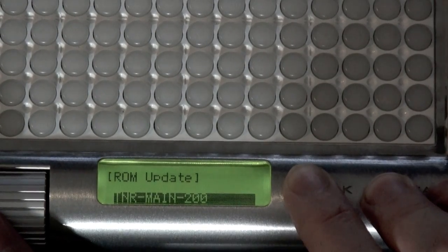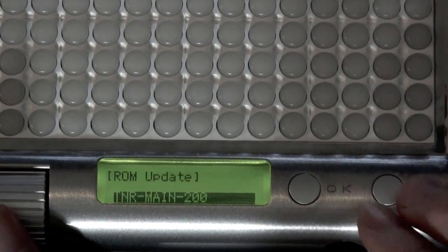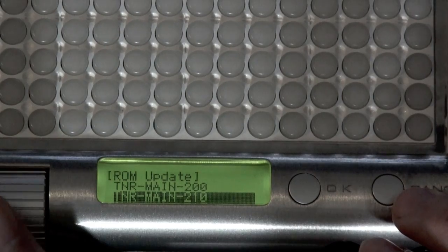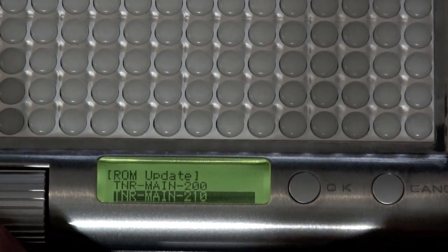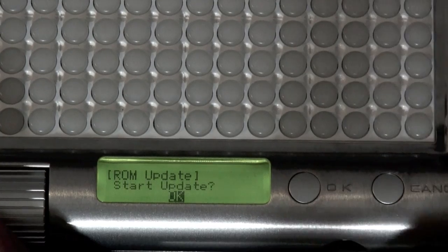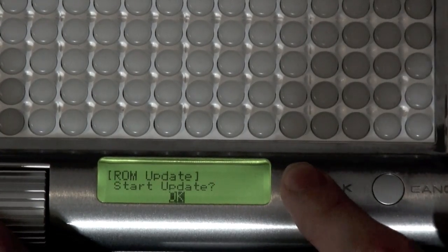You will see a screen offering ROM update. Use the wheel and select 210. Then press OK and OK again.